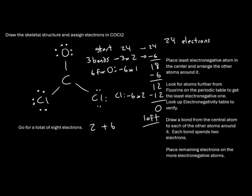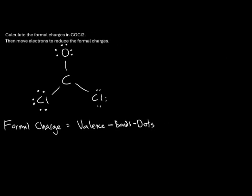The electrons we have in that structure we will now have to move, but we cannot place any new ones. Just because we placed all the electrons does not necessarily mean our structure is finished. We're going to calculate a formal charge for each atom and try to get the formal charges as low as possible, starting with the chlorine on the lower left. The formal charge equals the valence number minus the bonds connected to it minus the dots around it.